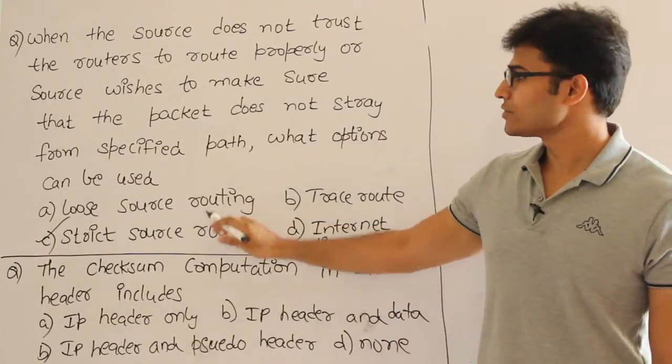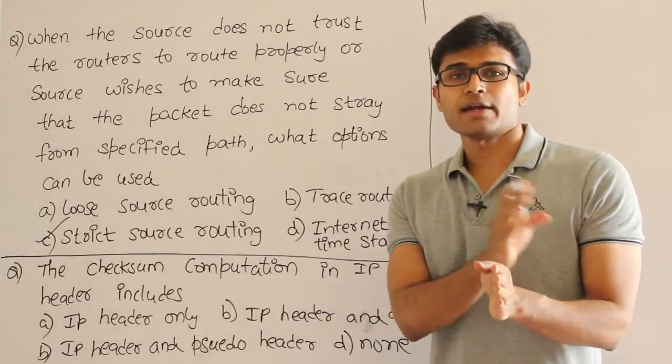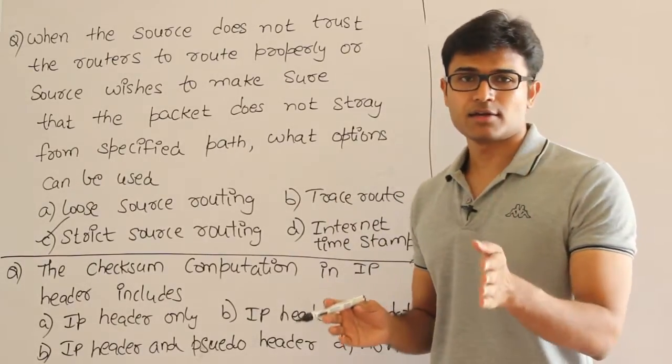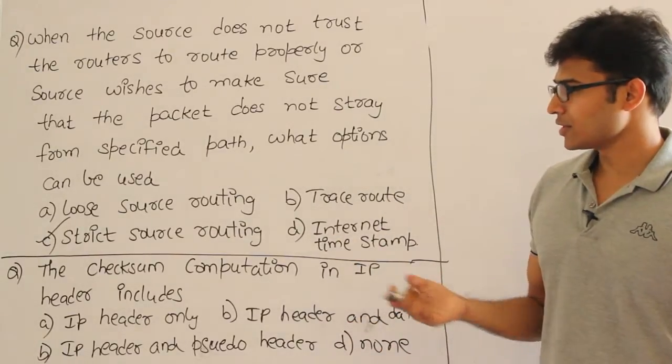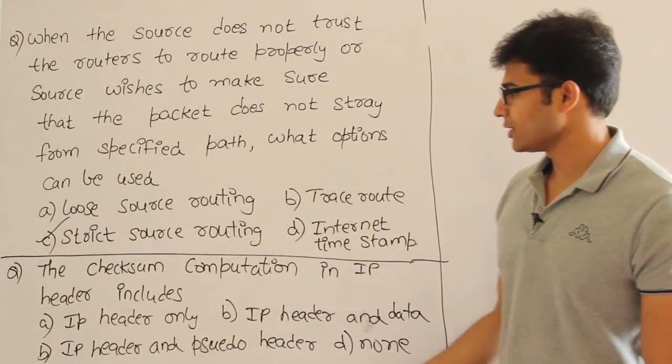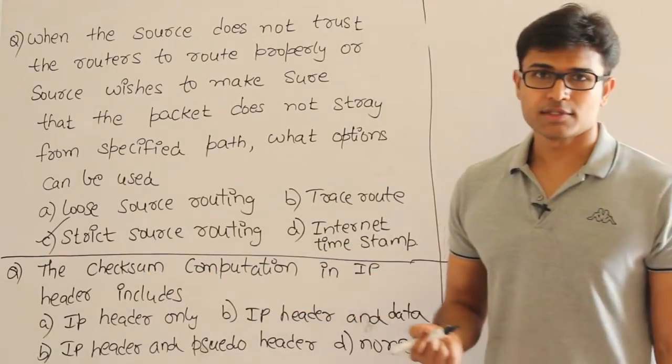If you have to specify the exact path, go for strict source routing. See, source routing is definitely the option, but then loose or strict, that depends. So they are saying that you don't want to stray the packet at all, which means the packet should always follow the path which is specified by you. Then obviously it is strict source routing, not the loose source routing.